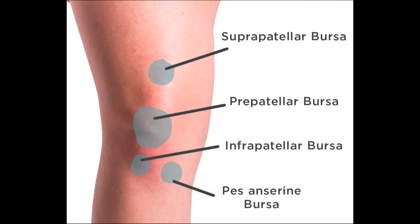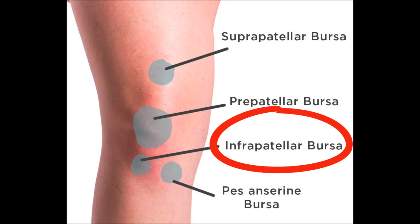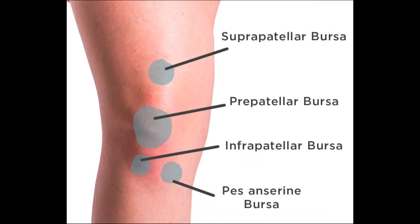The knee region has four bursas. The mnemonic goes: some parrots imitate people. The first S is for the suprapatellar bursa, the P is for the prepatellar bursa, the I is for the infrapatellar bursa, and the last P is for the pes anserine bursa. The pes anserine bursa is important because three muscle tendons attach to this point: the sartorius, the gracilis, and the semitendinosus.